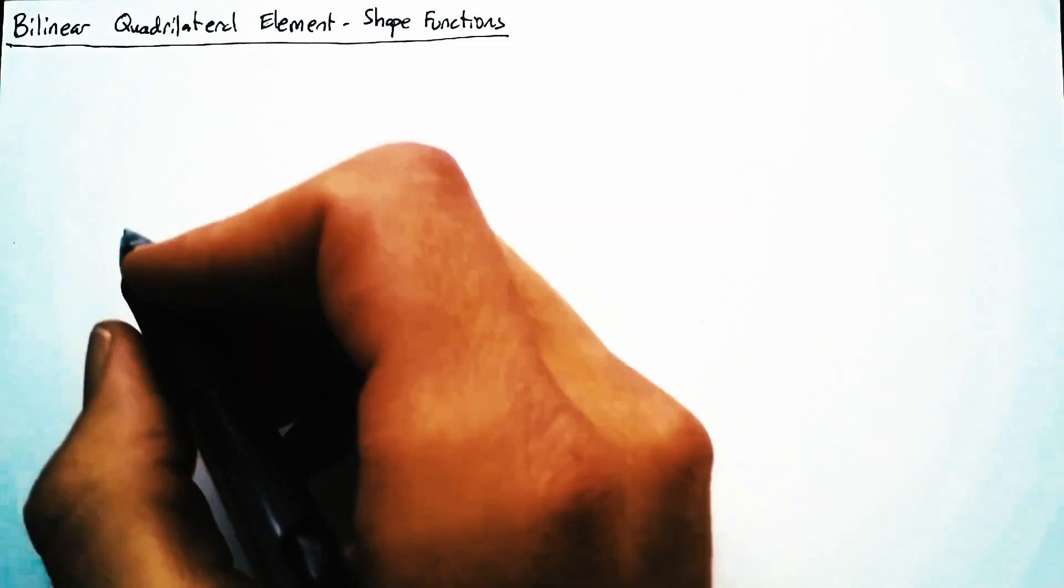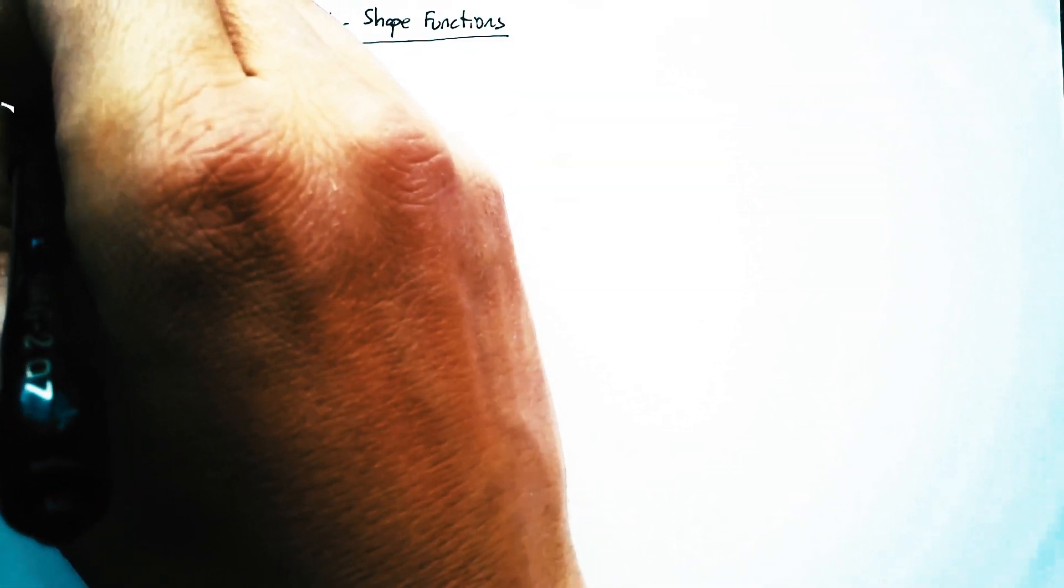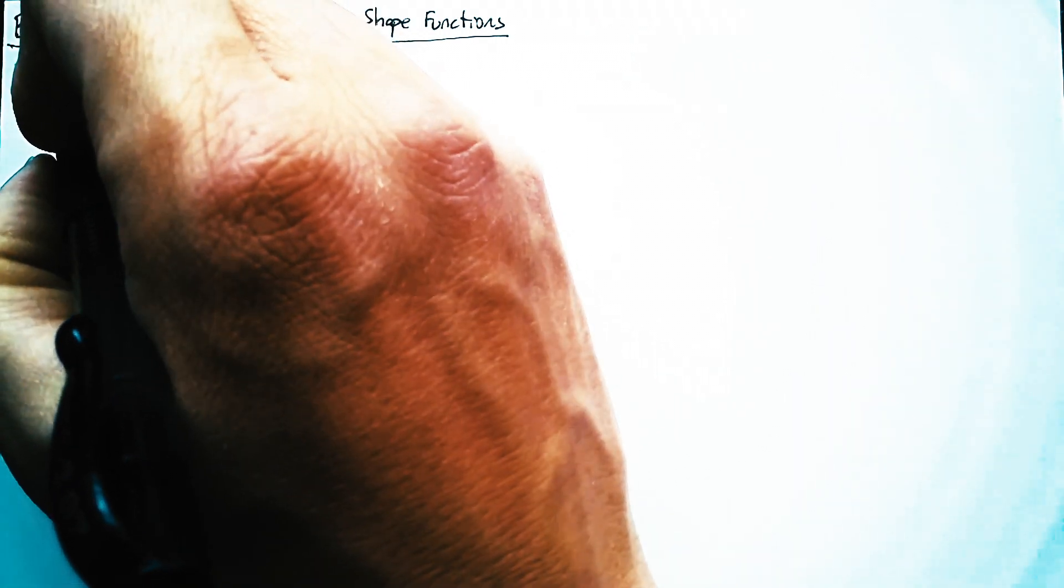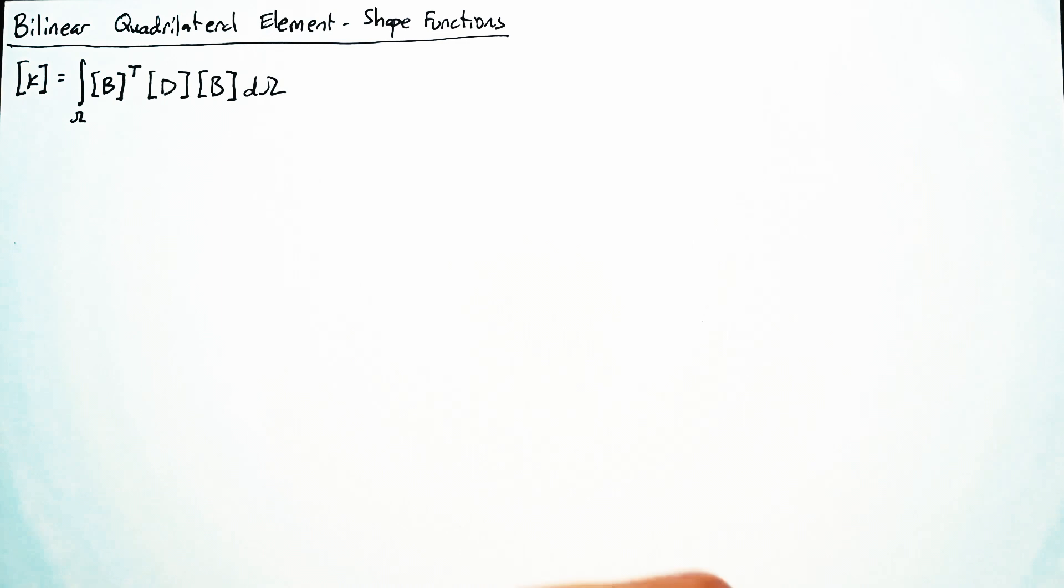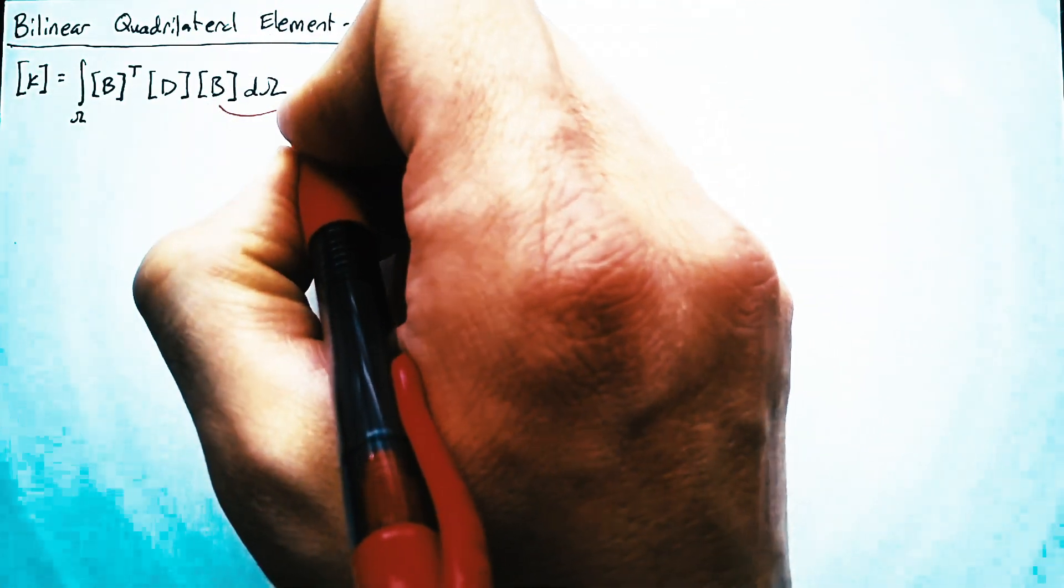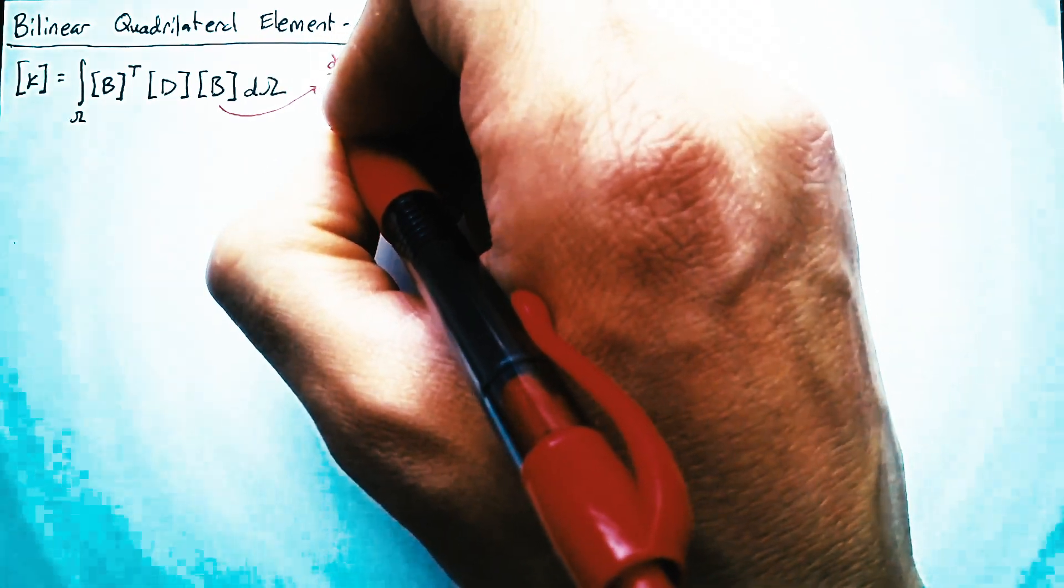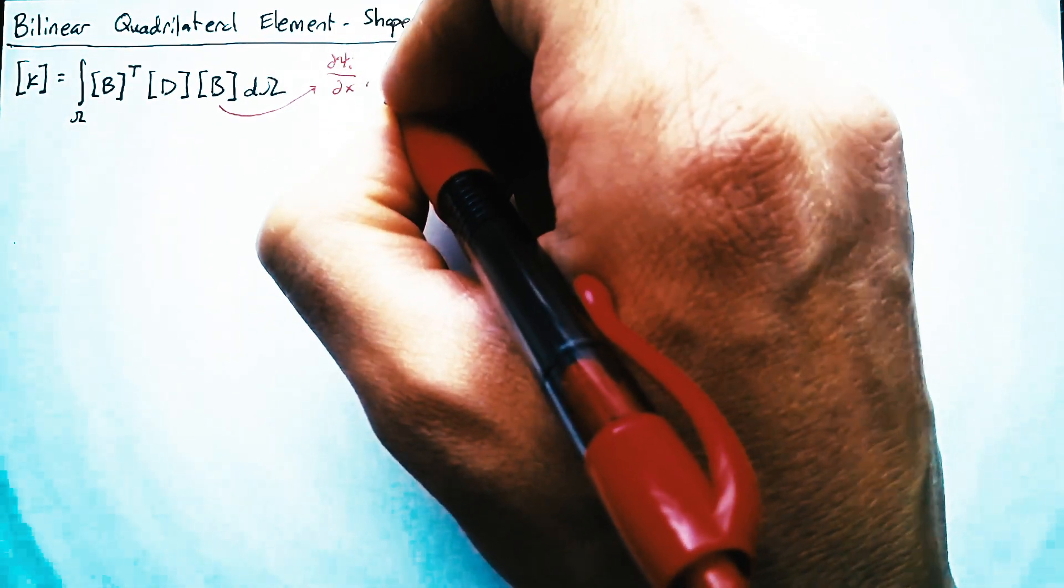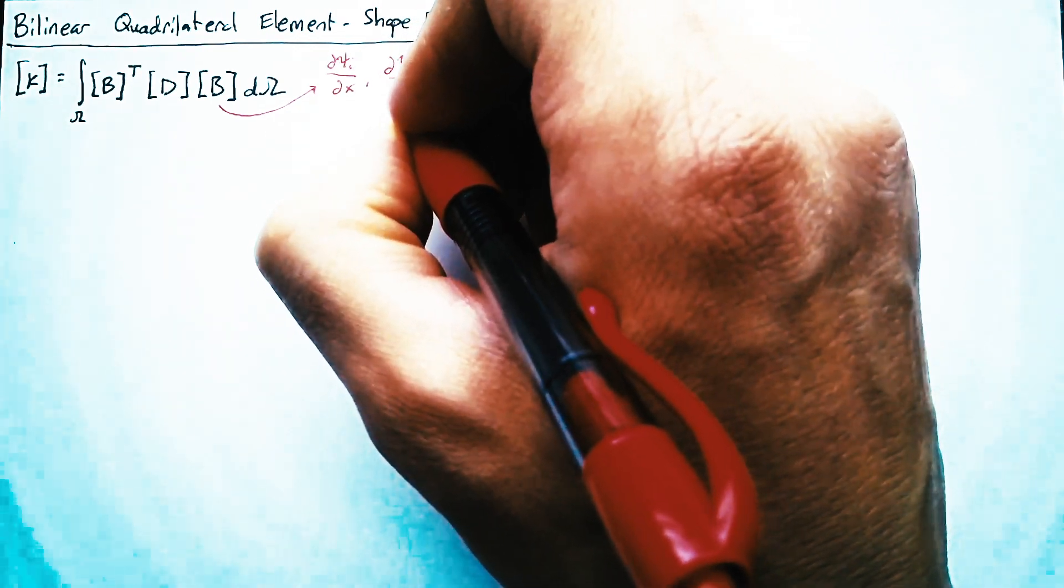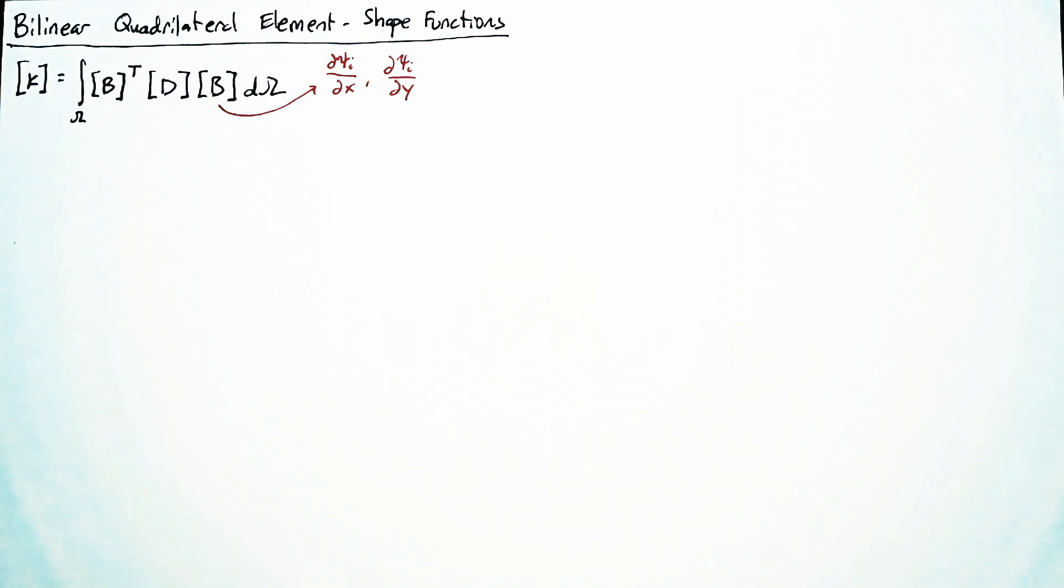So just as a reminder, our goal here is to find the stiffness matrix, which was composed of an integral over our domain of that B matrix, which has the derivatives of our shape functions, multiplied by D, multiplied by B. And because these have the derivative of our shape functions with respect to X and Y, we need to define those shape functions in such a way that we can find those values relatively easily.